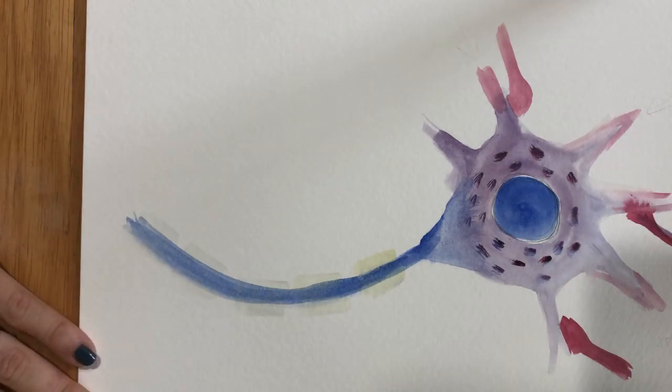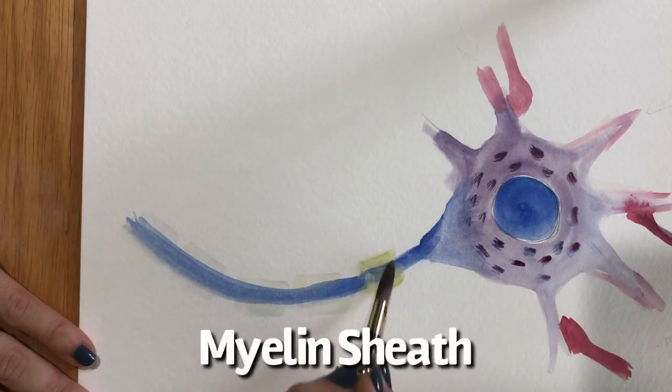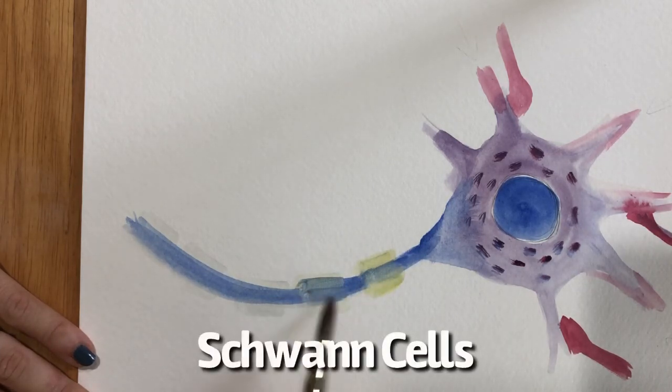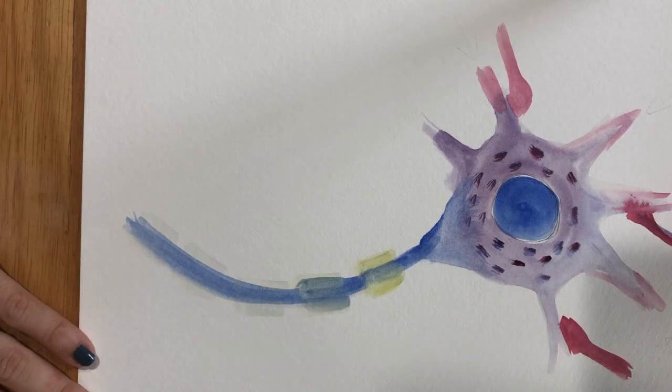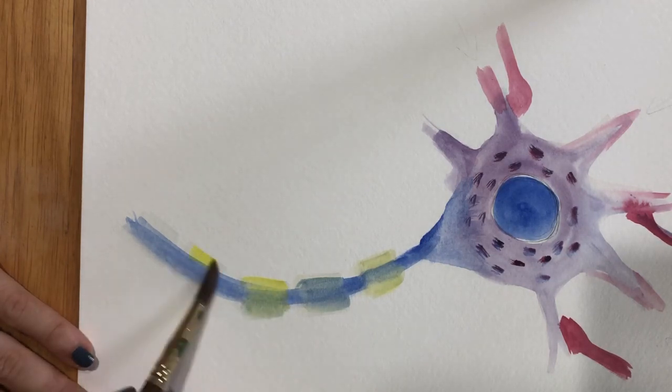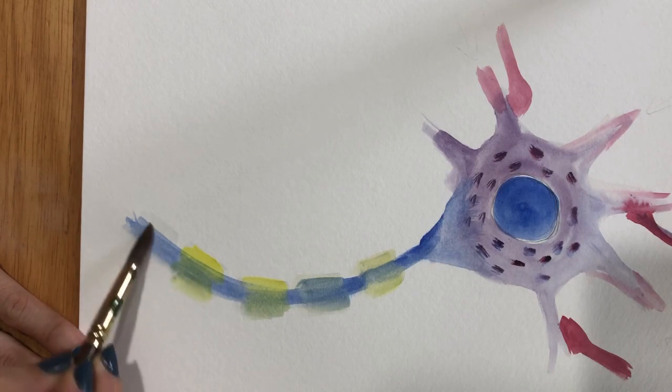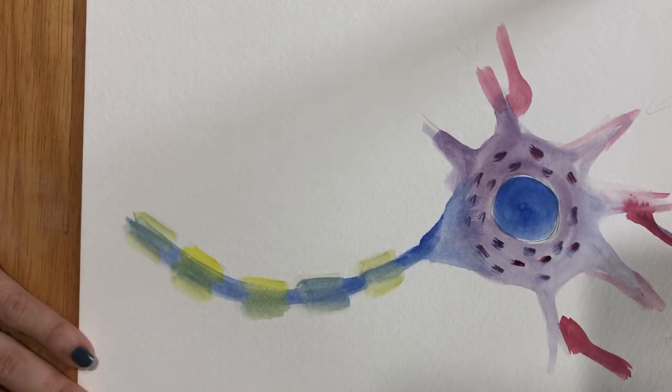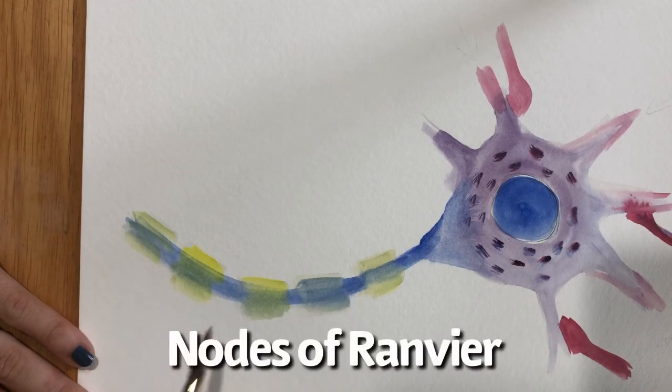Now this axon, in order to allow the impulse to continue to travel, is going to be covered in myelin by Schwann cells. So here we paint some of those Schwann cells, another Schwann cell, another Schwann cell. Now these cells have gaps in between them called the nodes of Ranvier.